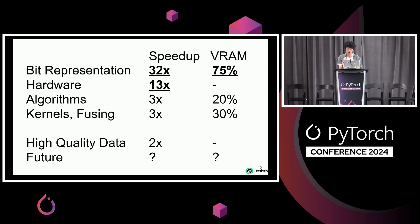I'm going to talk about six different things. The first one is bit representation — if you reduce the bit representation, you can make things faster and also reduce VRAM. Hardware is also very important, so tensor cores make the process faster. Algorithms make training faster without reducing accuracy. Kernels, fusing, and high-quality data — like the FineWeb dataset — has been a hot topic recently. I'm also going to talk about the future: hypotheses about what's probably coming.